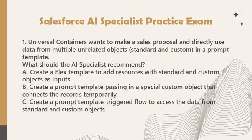Question 1: Universal Containers wants to make a sales proposal and directly use data from multiple unrelated objects, standard and custom, in a prompt template. What should the AI specialist recommend? A. Create a Flex Template to add resources with standard and custom objects as inputs. B. Create a prompt template passing in a special custom object that connects the records temporarily. C. Create a prompt template triggered flow to access the data from standard and custom objects.